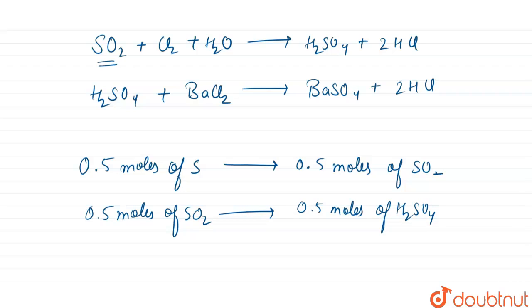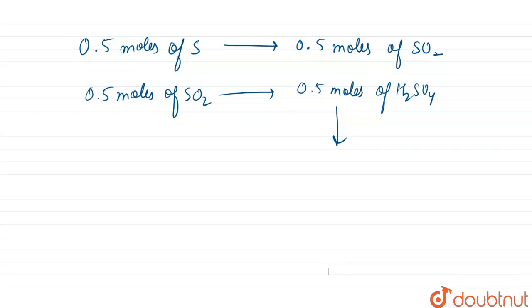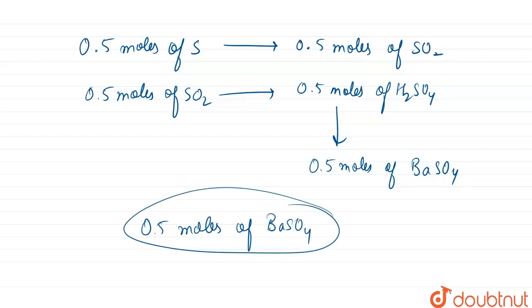The third reaction gives 0.5 moles of barium sulfate. So we can say that 0.5 moles of barium sulfate is obtained.